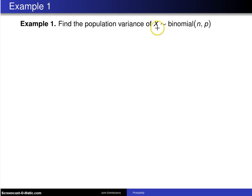Find the population variance of X, which has the binomial distribution with N and P. A few slides ago, we found the population mean, and so this time we're trying to figure out the population variance. But the problem starts out essentially the same.